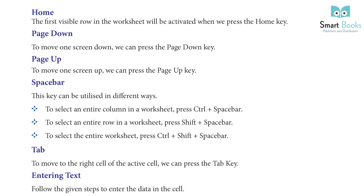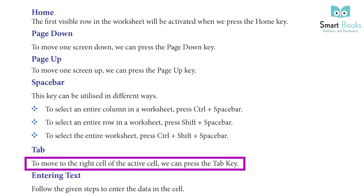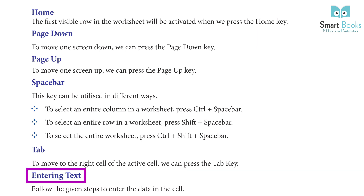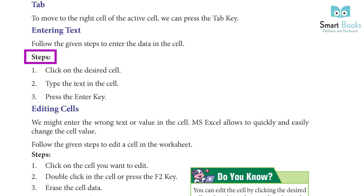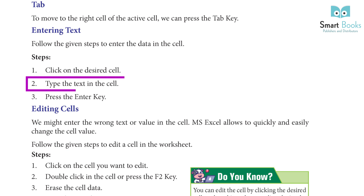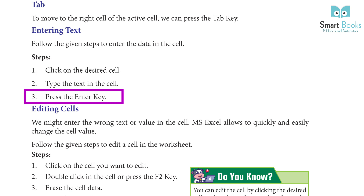Tab: to move to the right cell of the active cell, we can press the Tab key. Entering Text: follow the given steps to enter data in the cell. Step 1: click on the desired cell. Step 2: type the text in the cell. Step 3: press the Enter key.